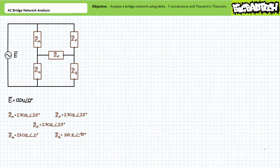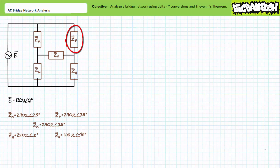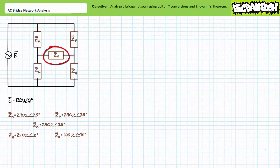Let's first examine bridge network analysis using the delta-to-Y conversion. Consider a 120-volt, 60-hertz AC source supplying a bridge network of five impedance elements. ZM, the top left upright, is 270 ohms at 25 degrees. ZN, the bottom left upright, is 240 ohms at 0 degrees. ZP, the top right upright, is 270 ohms at 25 degrees. ZQ, the bottom right upright, is 100 ohms at negative 90 degrees. ZX, the bridge span, is 270 ohms at 25 degrees.